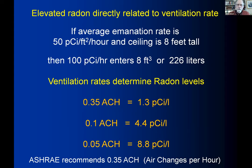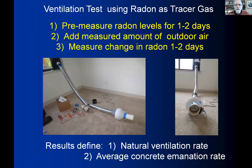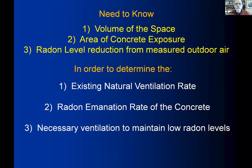To quantify the ventilation rate and concrete emanation, Bill used radon as a tracer gas. After pre-measuring radon for one to two days, he introduced 30, 40, or 50 CFM of measured outdoor air and tracked the radon change over the next two days. Knowing the space volume, concrete area, radon levels, and outdoor radon concentration, he could calculate the actual ventilation rate, average emanation rate, and how much additional air was needed.